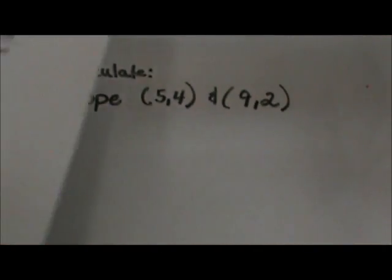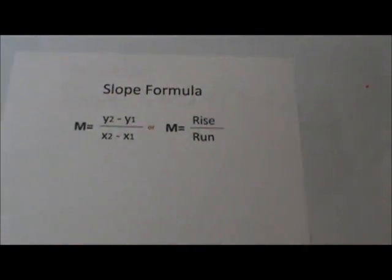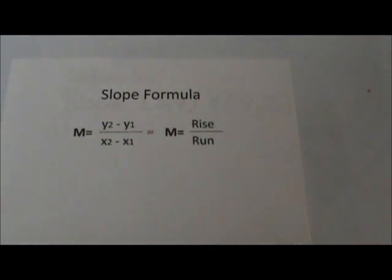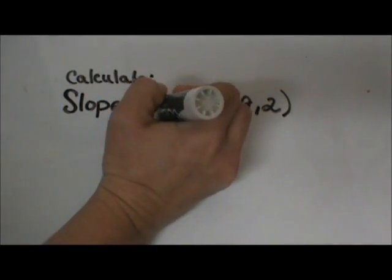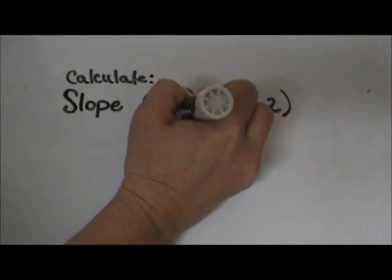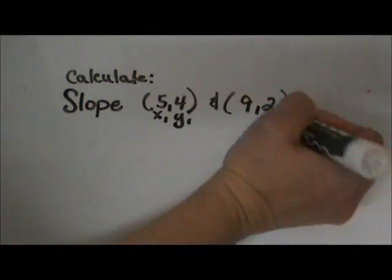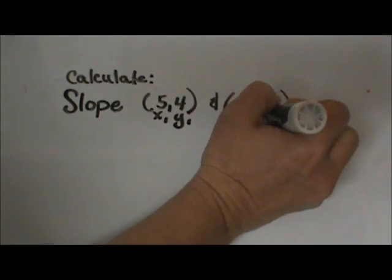First we need to know the slope equation or the slope formula, and it is y2-y1 over x2-x1, which is the rise over the run. Let me label our ordered pairs as x1, y1 and x2, y2.